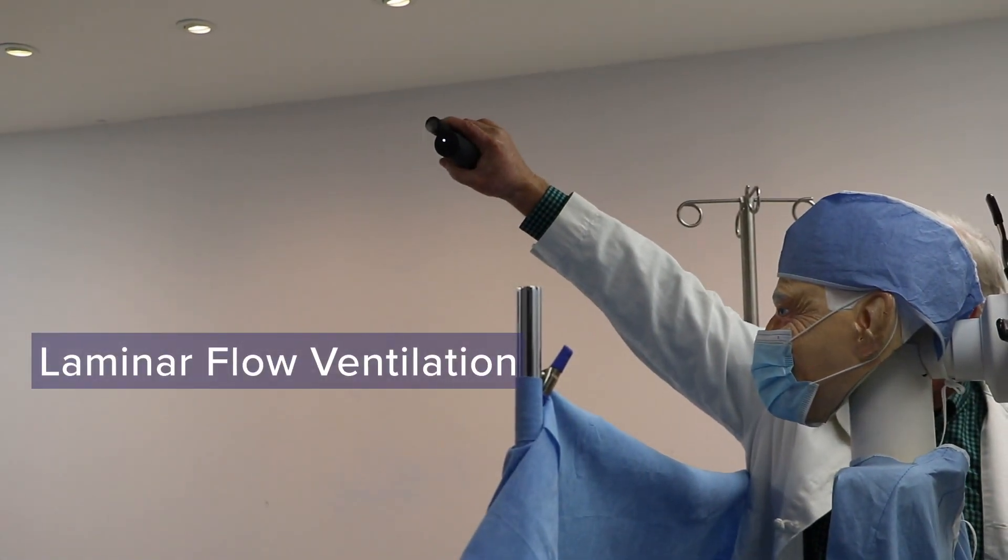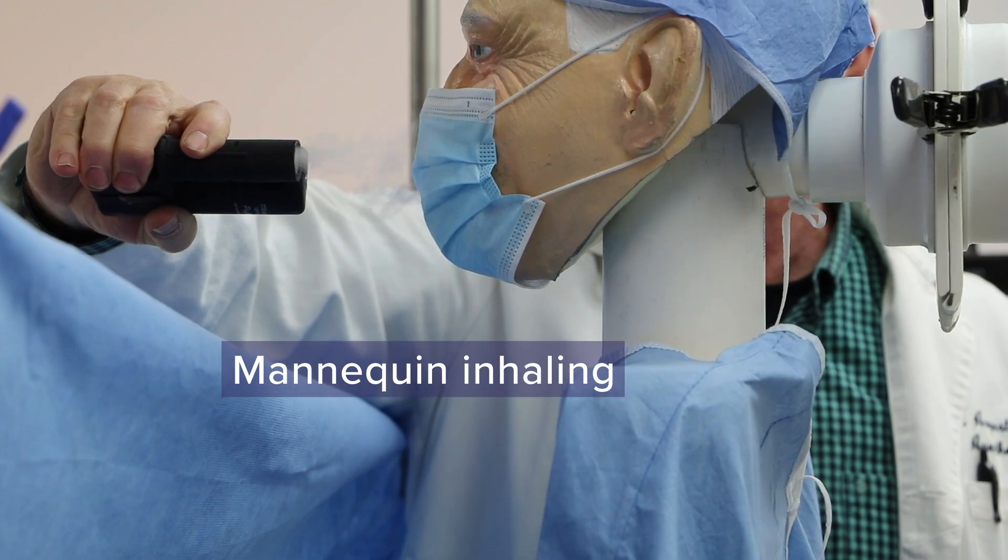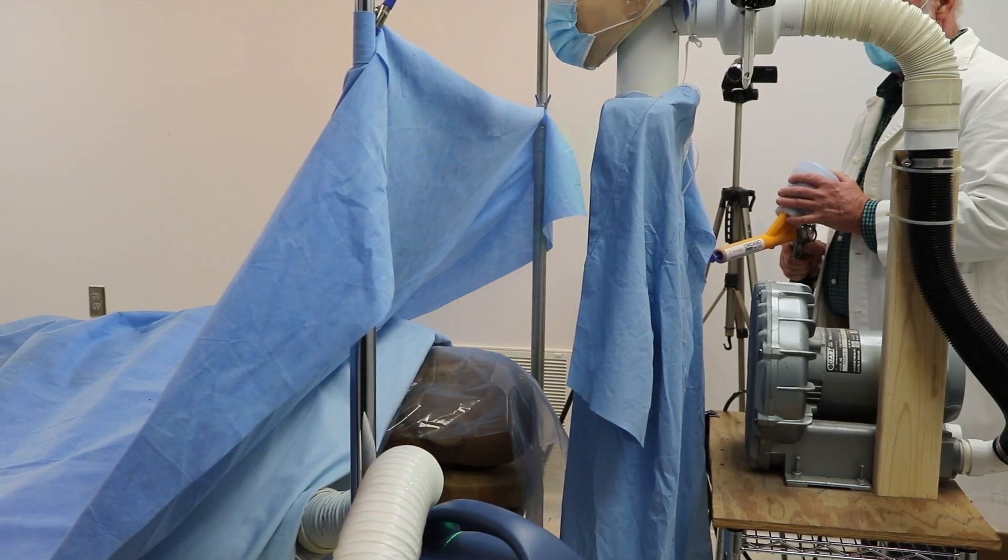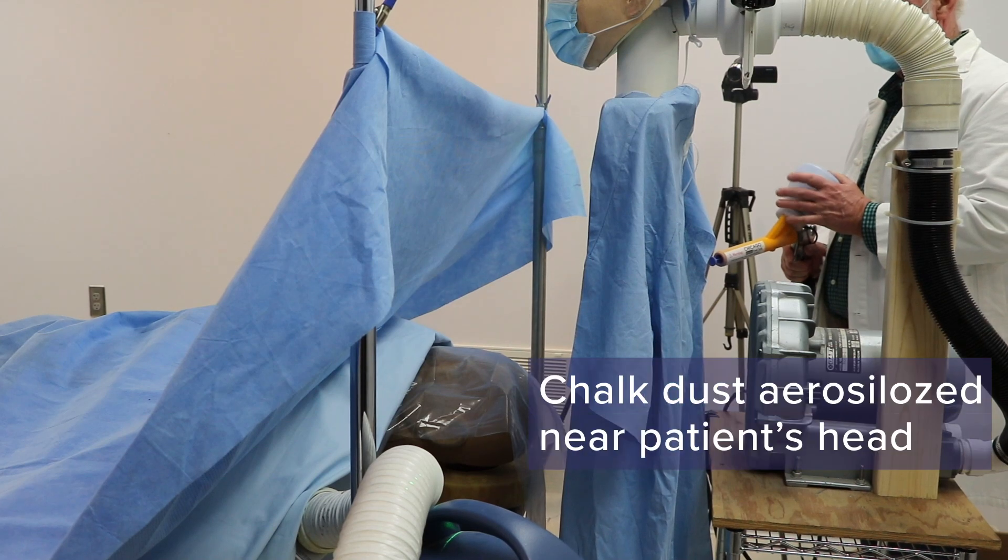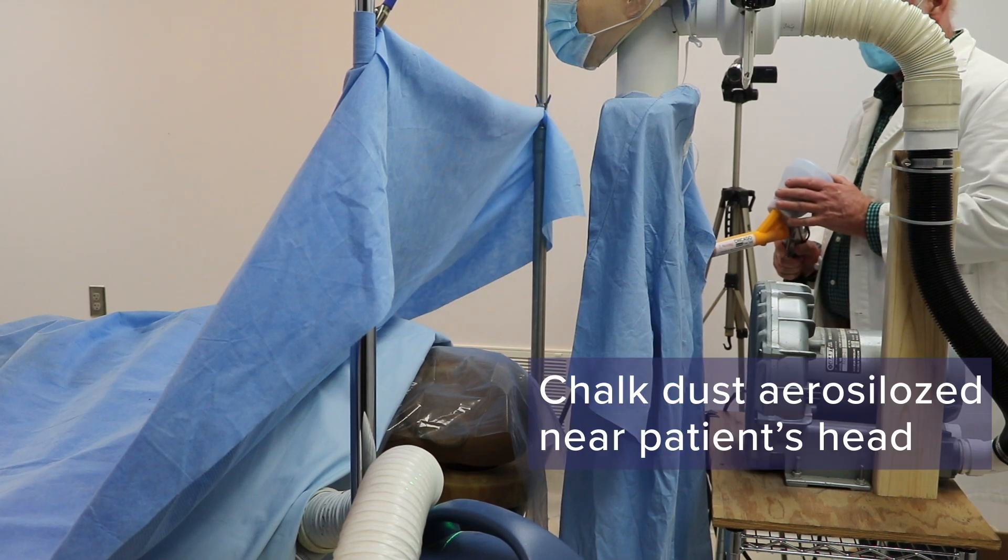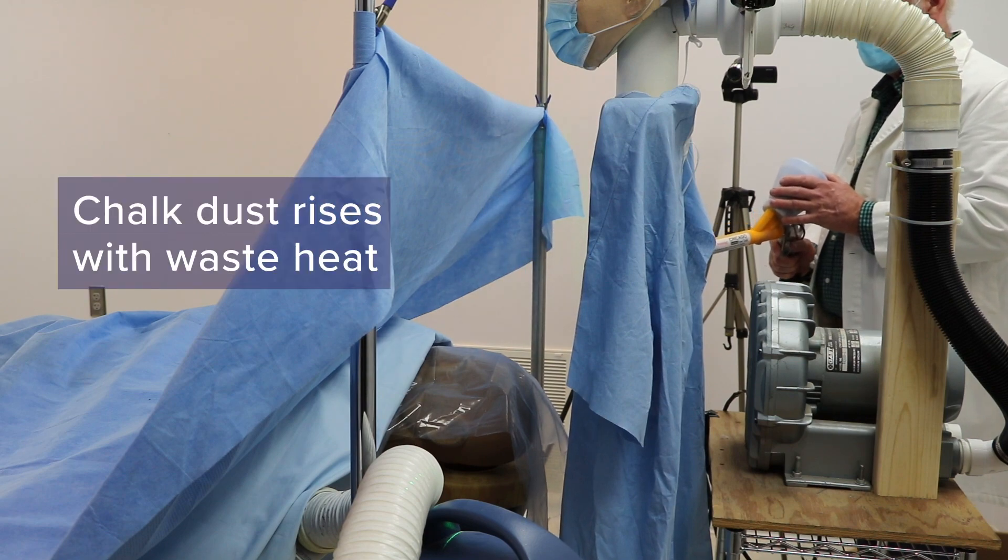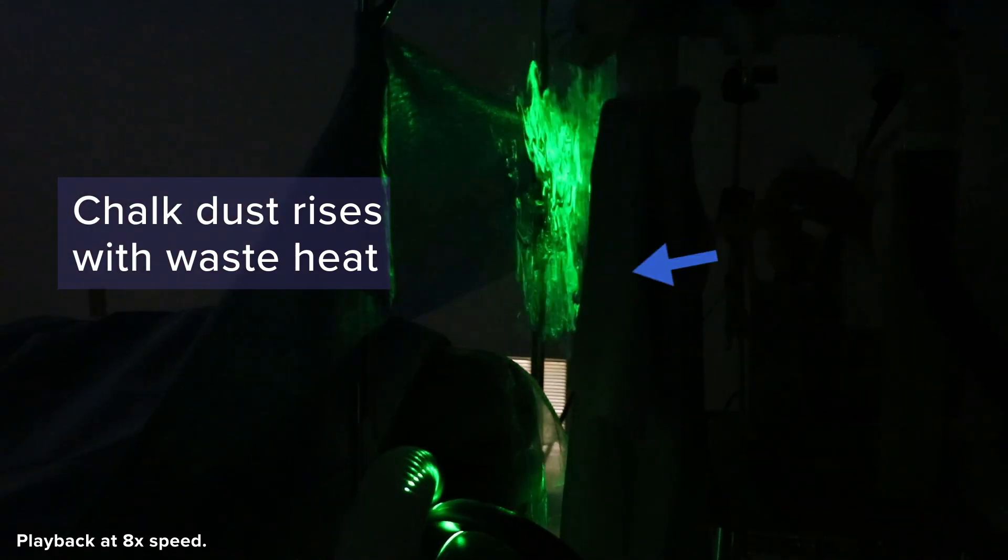The laminar flow system is effective. An inhalation simulator is operating. An upper body forced air blanket is warming on the high setting. Chalk dust is aerosolized near the patient's head under the anesthesia drape. It is sprayed ten times from a consistent angle, well below the anesthesia provider's breathing zone.